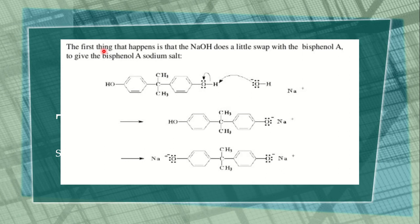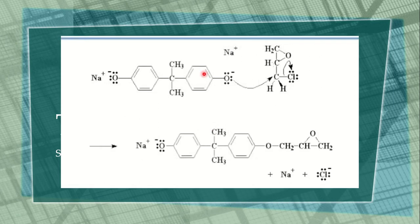In the mechanism, NaOH first does a swap with bisphenol A to give the bisphenol A sodium salt. This is the first step where bisphenol A sodium salt formation takes place. This is the total mechanism for the preparation of bisphenol A sodium salt.